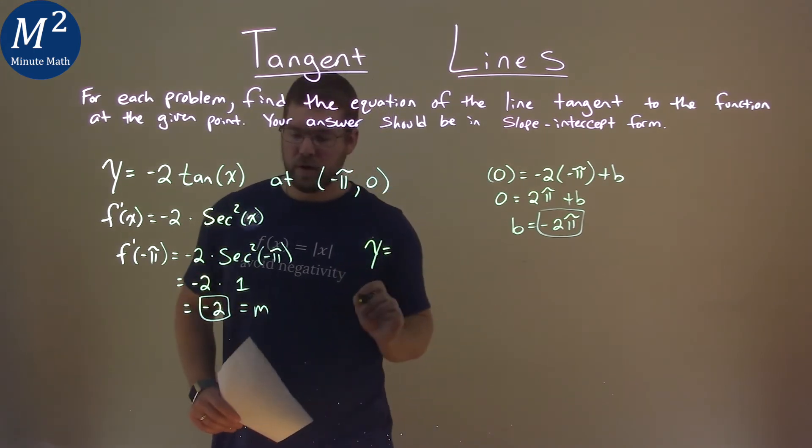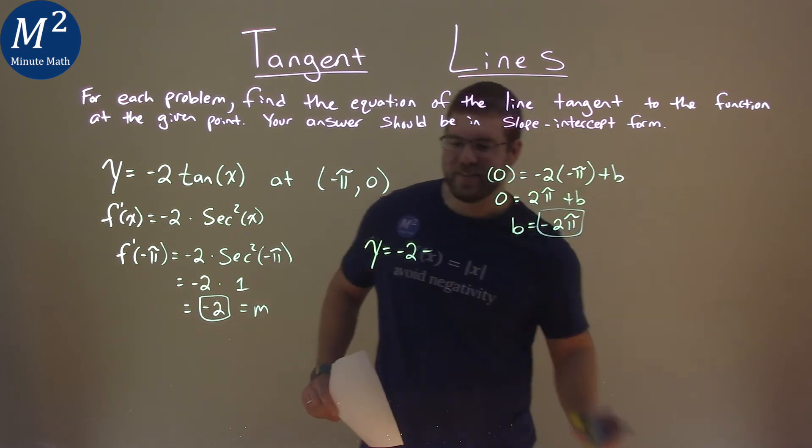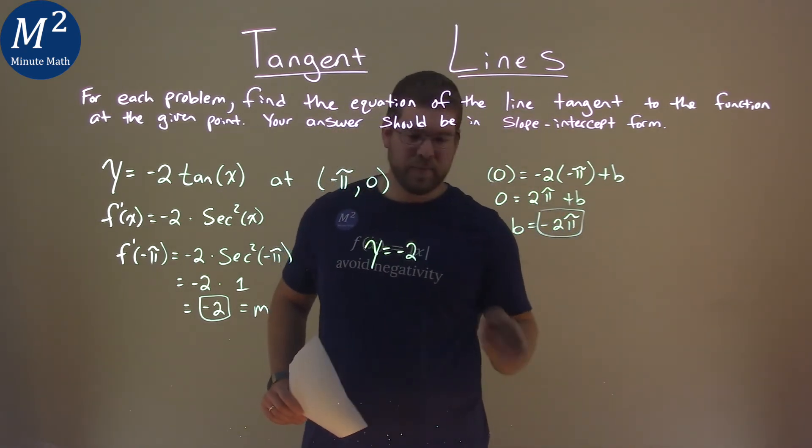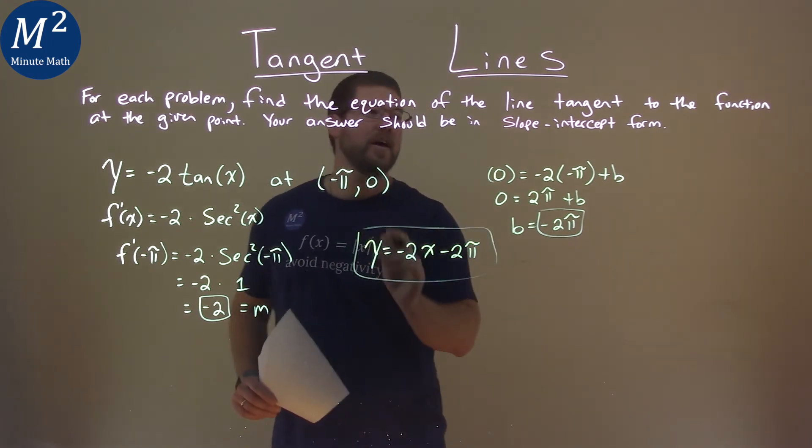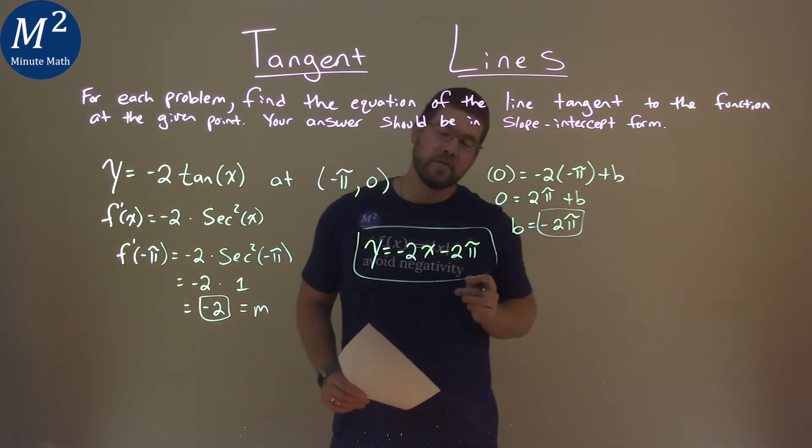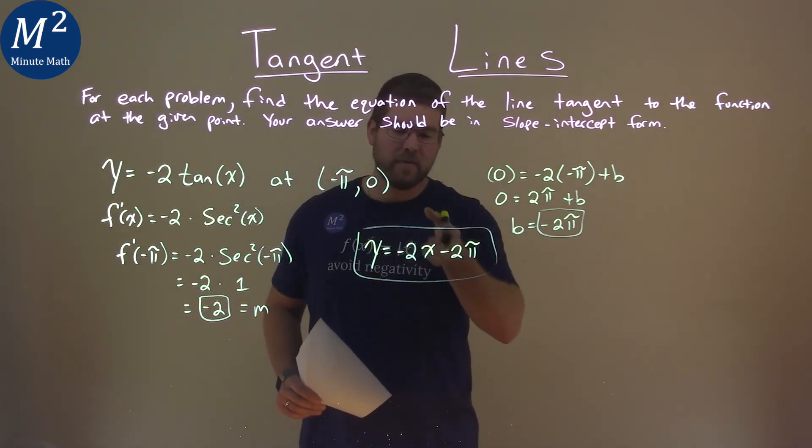We have y equals our slope, negative 2x, with the variable there, negative 2x minus 2 pi. And that is the equation of the line tangent to the function at negative pi comma 0. And again, our final answer.